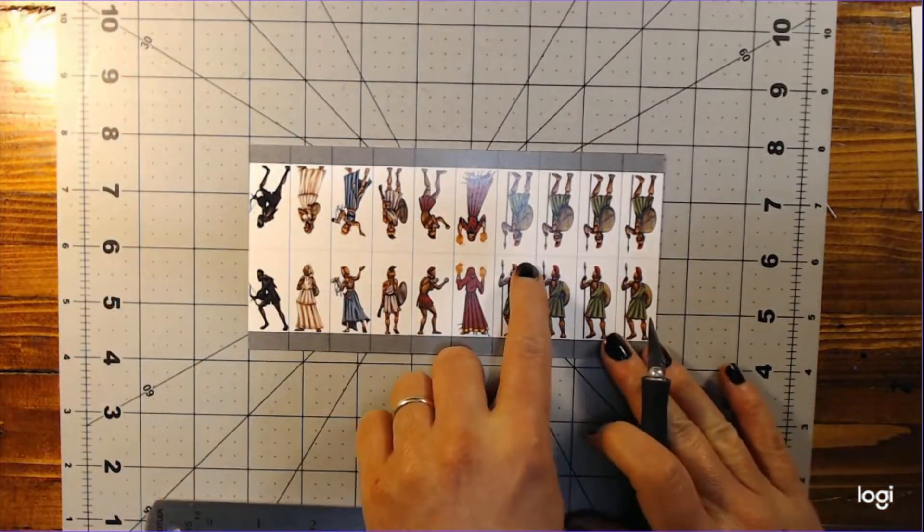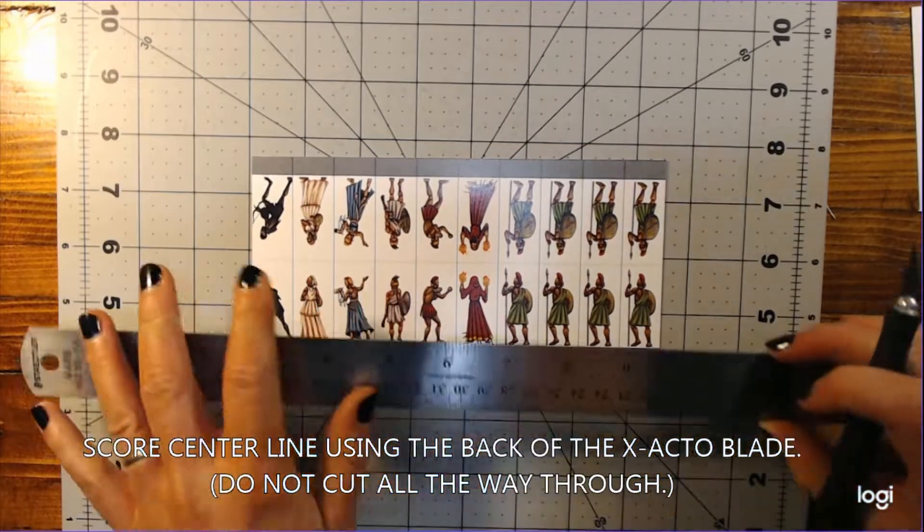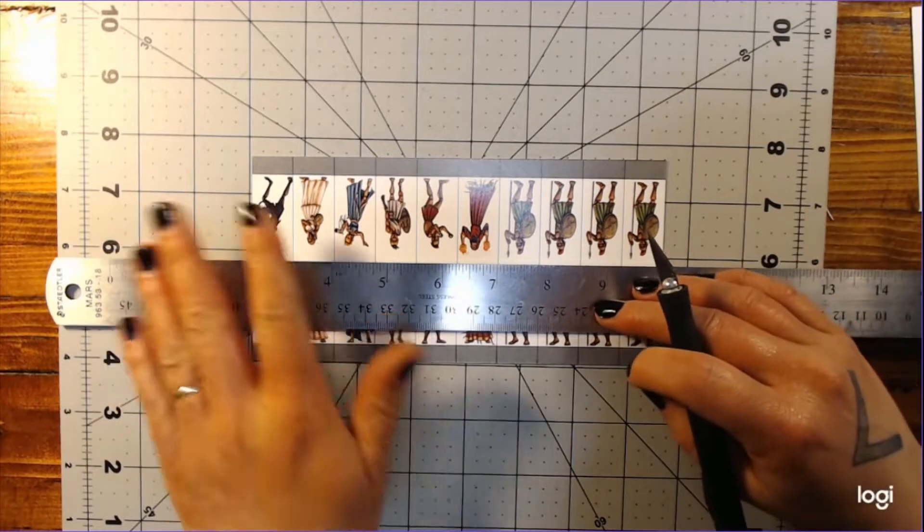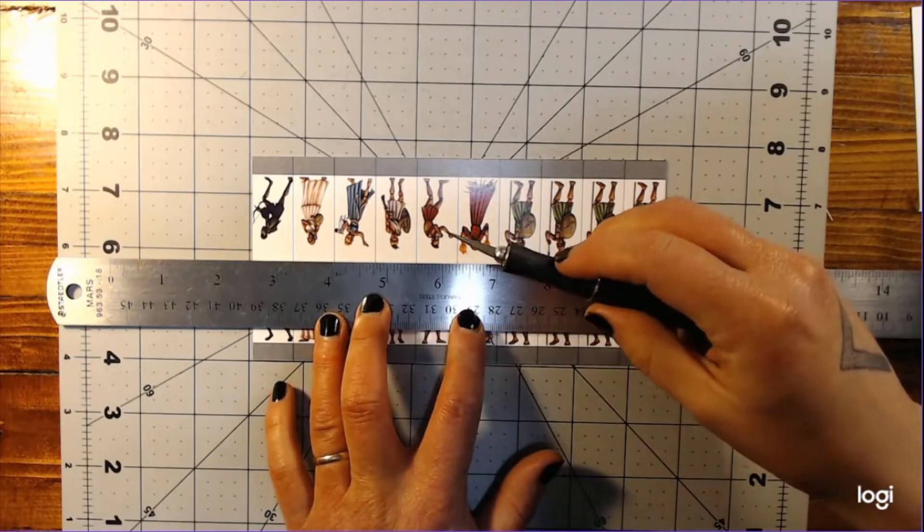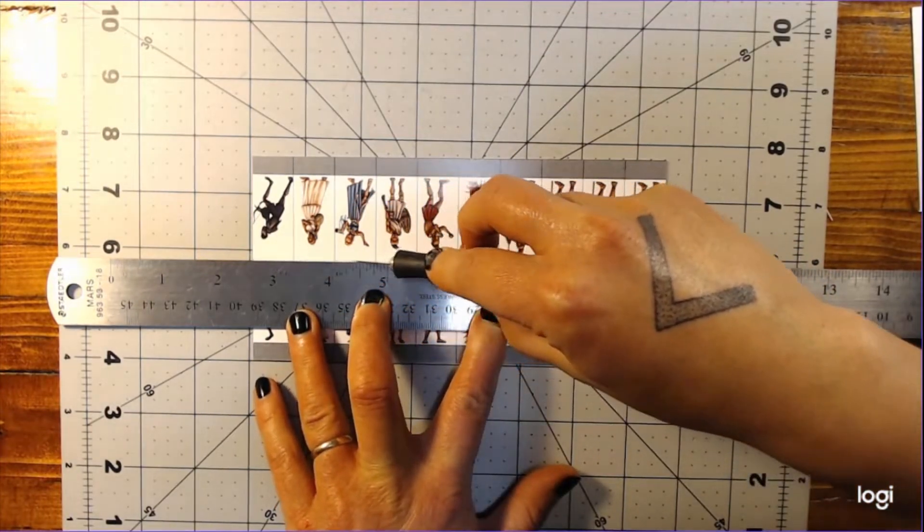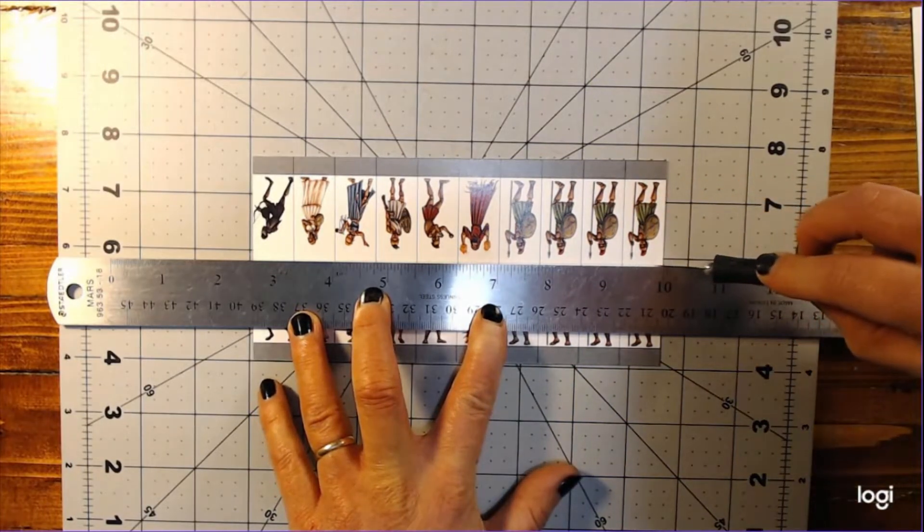Now you're going to score the center line between the two rows of miniatures. To score this center line, you will line up your ruler and then use the back of your exacto blade, the dull side not the sharp side, and drag it along the center line, once more using the ruler as a guide. Be very careful not to cut yourself on the exposed edge of the blade while you do this.